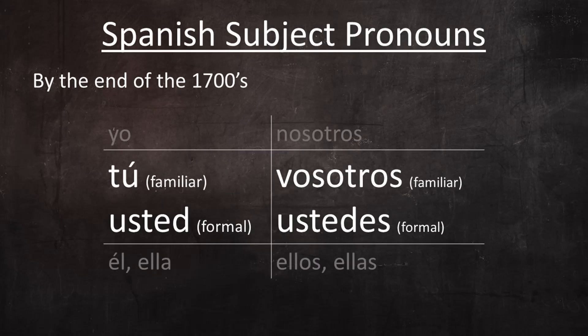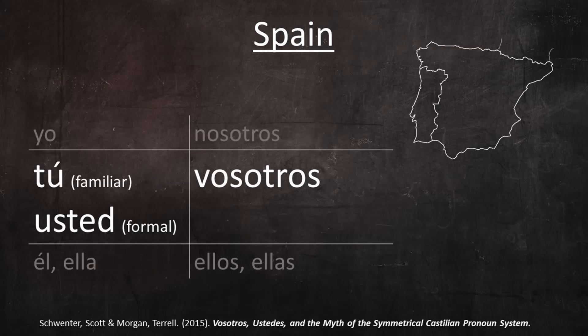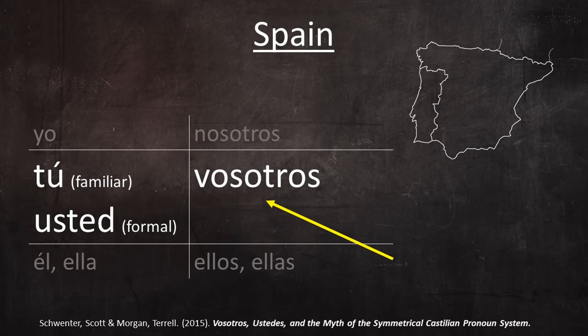Although it's not strictly historically accurate, I think it's very useful for students trying to understand the system of second-person address in Spanish to think of this framework as the basis. In the modern Spanish of Spain, both tú and usted are used — tú for friendly and informal address, and usted for formal address. Grammar books and pedagogical materials insist that the same contrast still exists between vosotros and ustedes, but in modern-day Spain there's a strong preference for vosotros in both informal and formal contexts.